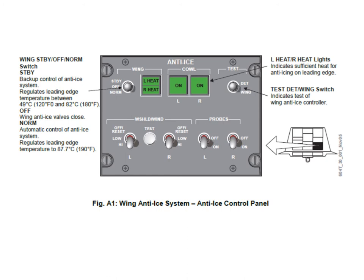For the wing anti-ice you have a single switch: off, standby, and normal. In normal mode, the anti-ice system maintains a leading edge temperature of 87.7°C. In standby mode it's kind of on or off - it switches on at 49°C, the leading edge heats up, and when it reaches 82°C it switches off. It's then allowed to cool down and will switch back on again at 49°C - a semi-automatic mode.